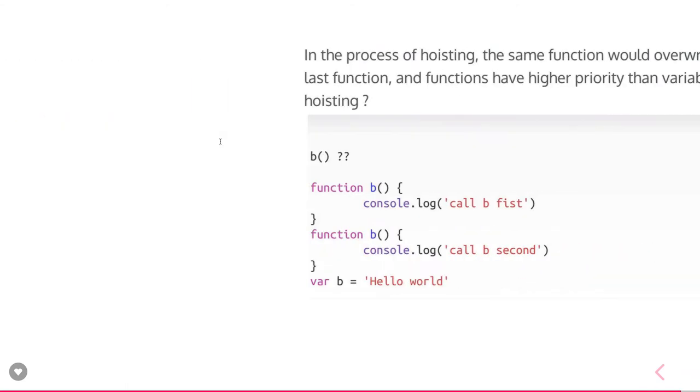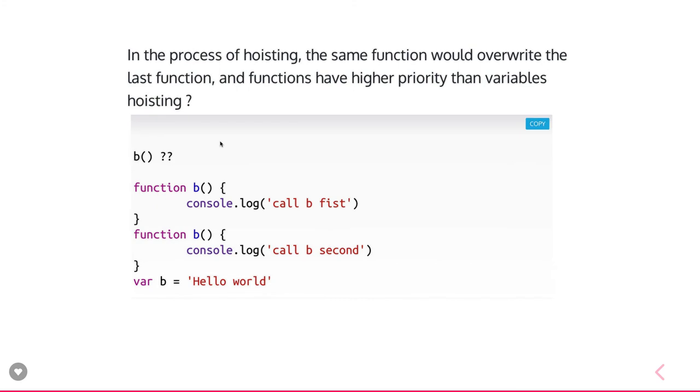If you talk about this example where I'm calling function b, what should be the value? The value will print the second function expression because the second function will be hoisted to the top and get priority over the first b function. So you will get call b second.